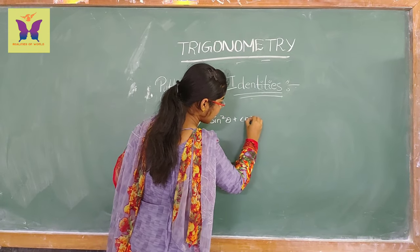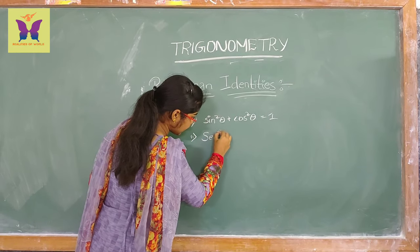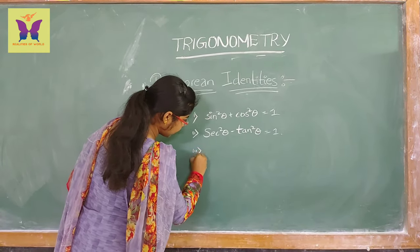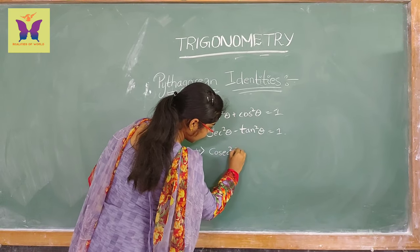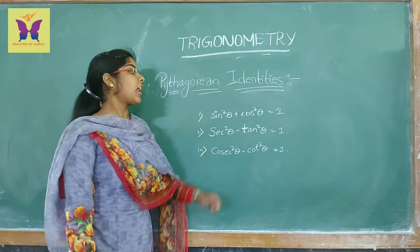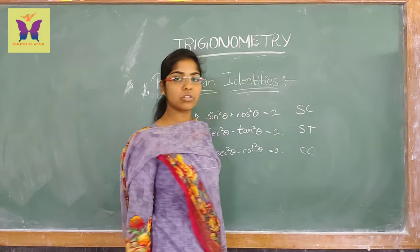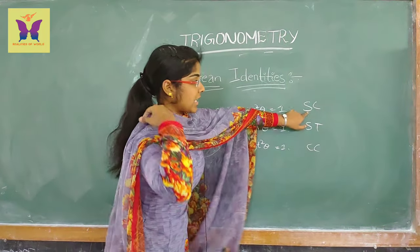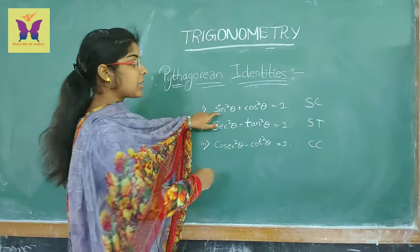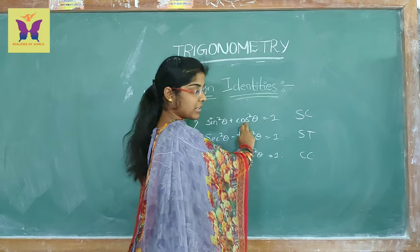There are three trigonometric identities. First: sin squared theta plus cos squared theta equals 1. Second: sec squared theta minus tan squared theta equals 1. Third: cosec squared theta minus cot squared theta equals 1. From these, sin squared theta equals 1 minus cos squared theta, and cos squared theta equals 1 minus sin squared theta.